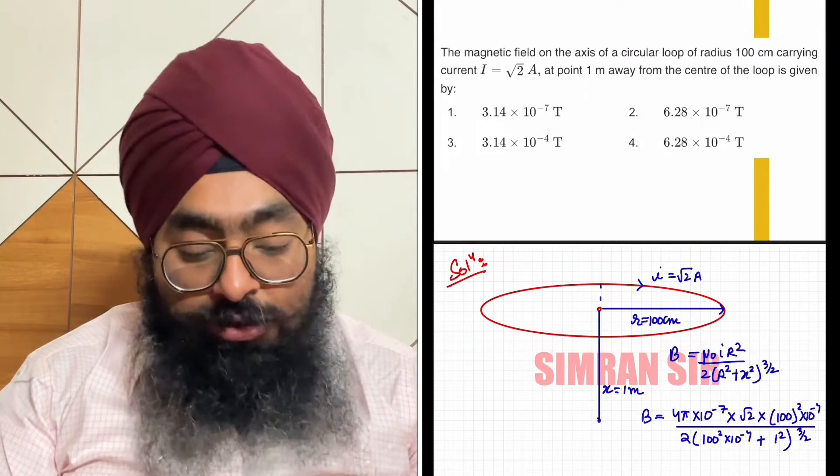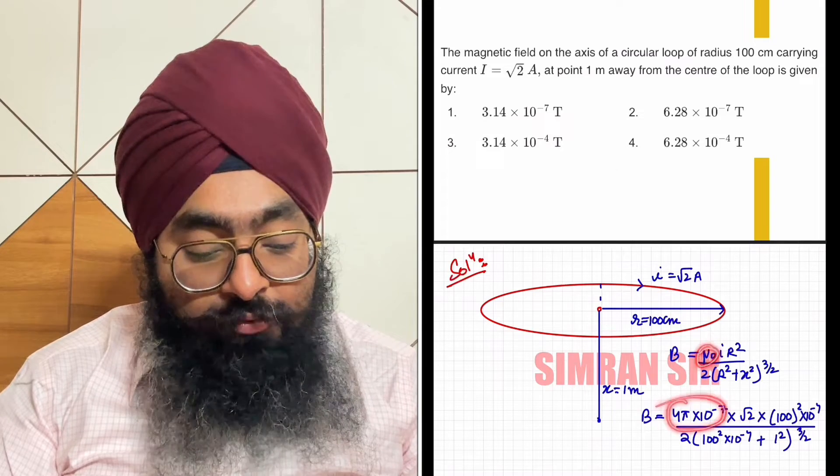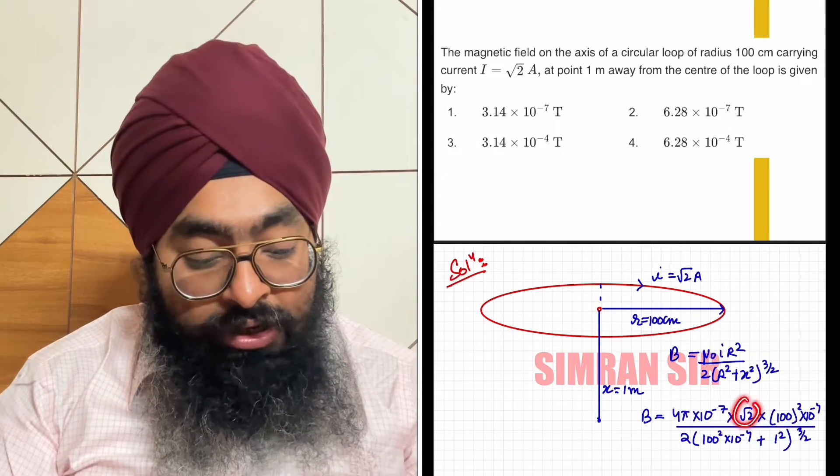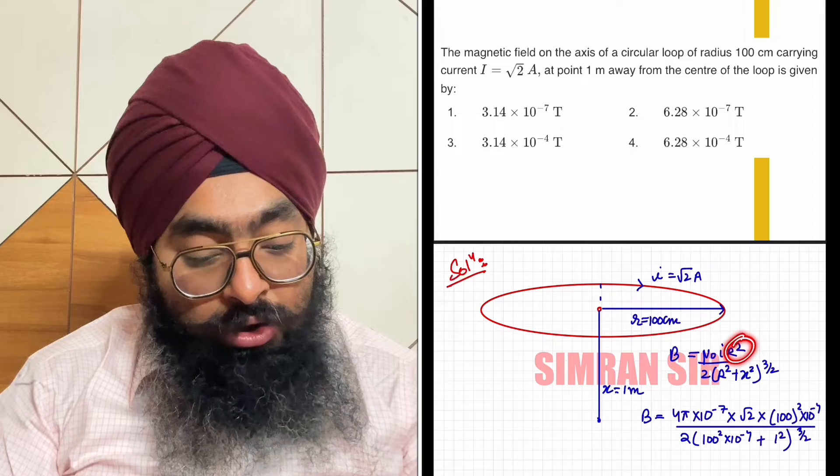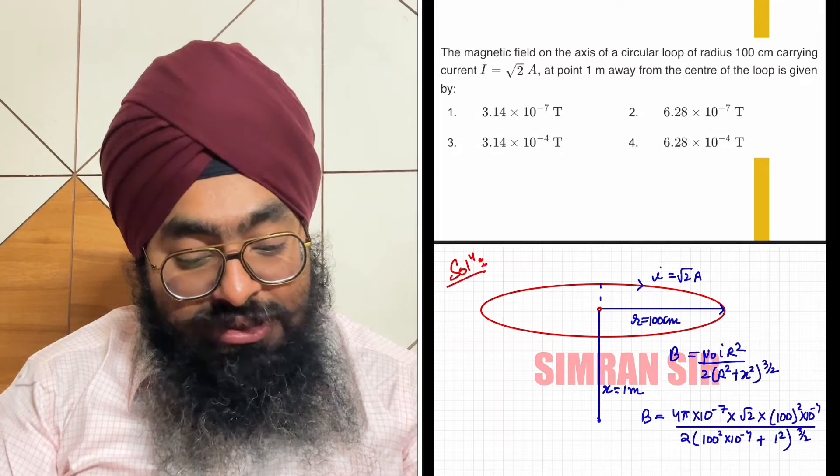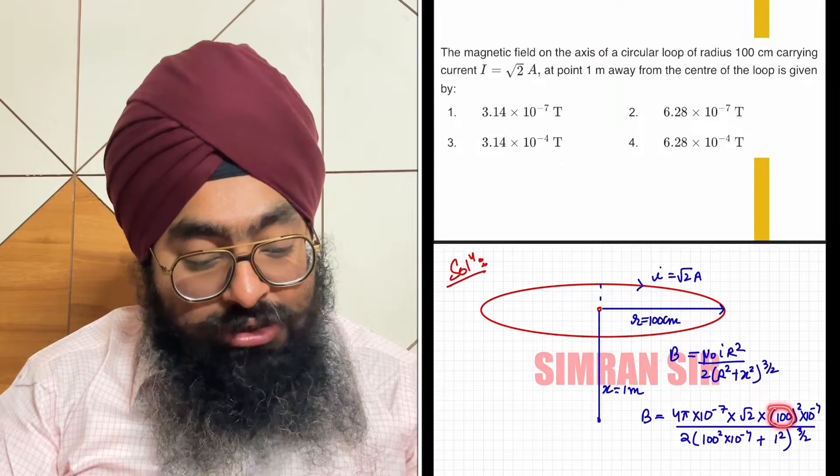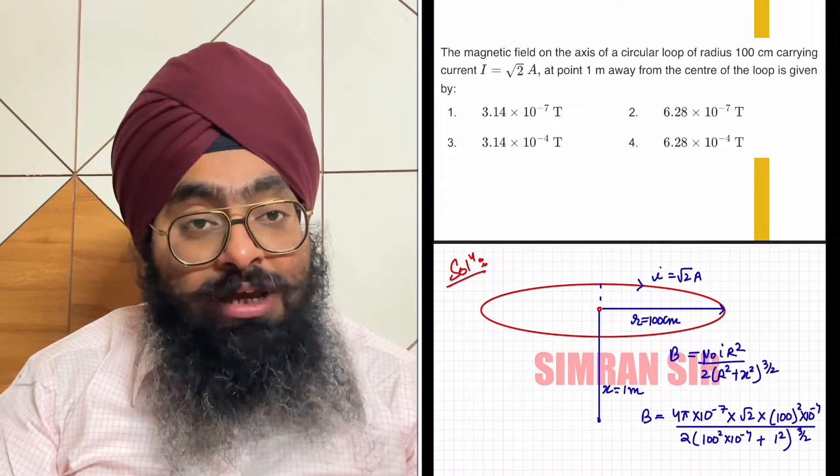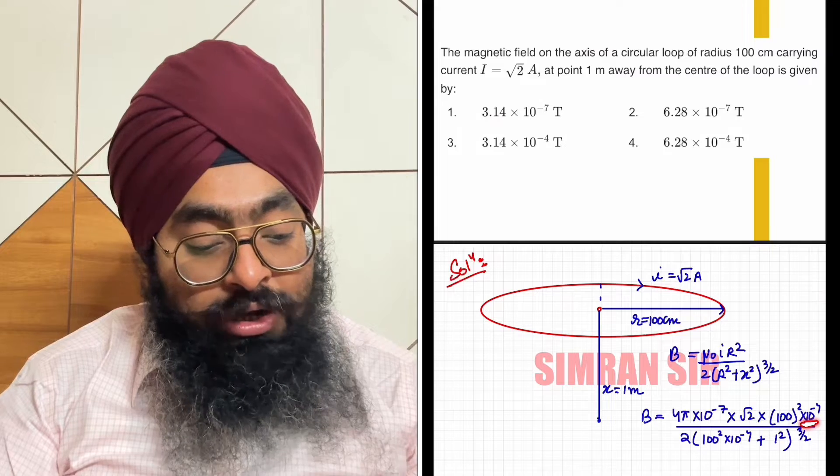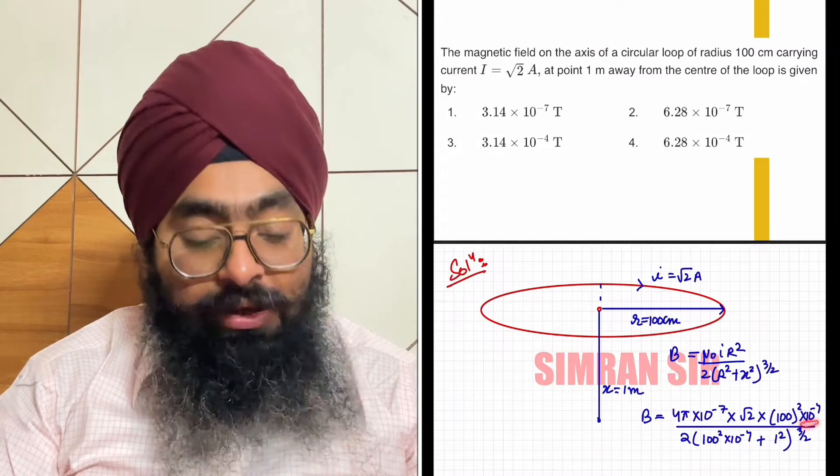Now we substitute the values. Mu_0 value is 4π × 10^(-7). Current is root 2, and r square means radius is 100 cm. Converting 100 cm to meters: 100 × 10^(-2), and when squared, (10^(-2))^2 = 10^(-4).